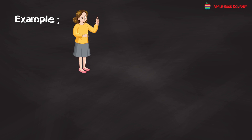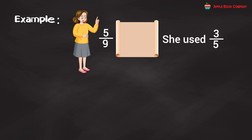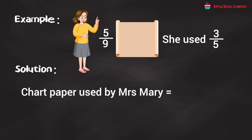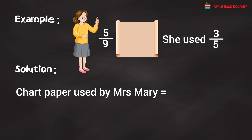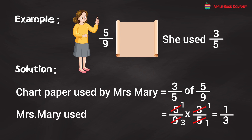Example: Mrs. Mary had 5/9 of a sheet of chart paper. She used 3/5 of it to make some cards. How much chart paper did she use? Solution: Chart paper used = 3/5 of 5/9 = 5/9 × 3/5. Cancelling: 3 and 3 give 1, 5 and 5 give 1, so the result is 1/3. Mrs. Mary used 1/3 of the sheet of chart paper to make cards.